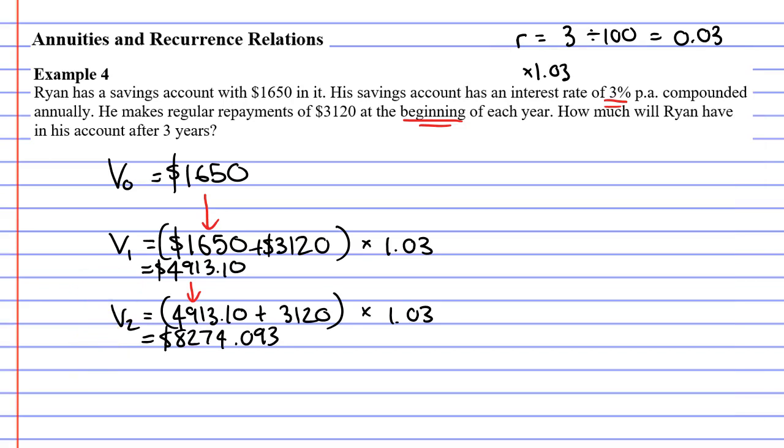Let's now move on to V3. V3 represents the value of our investment after three years has passed. We start by taking the previous result, which was $8,274.093, and we add on our repayment, $3,120. These two amounts need to be put in brackets, forcing the calculator to add first. And then we multiply by 1.03, which increases this value by 3%.